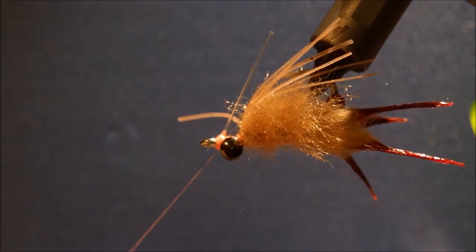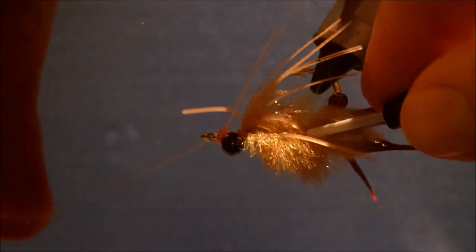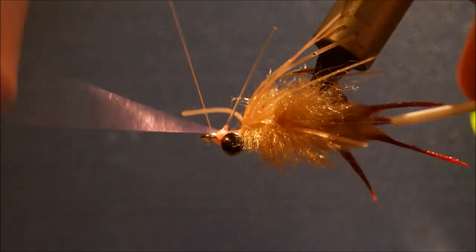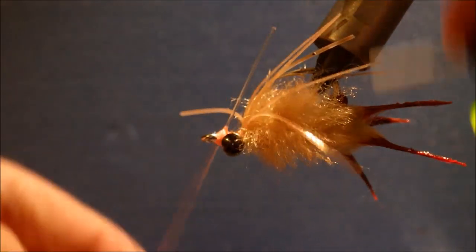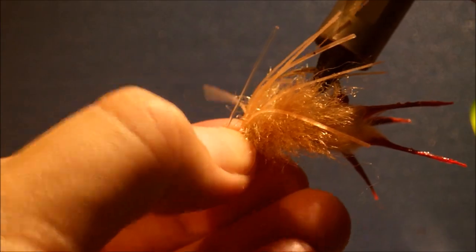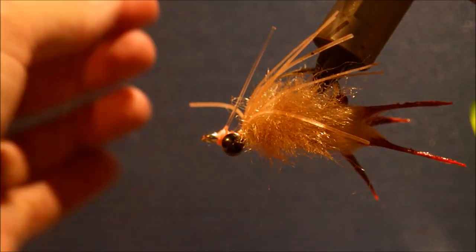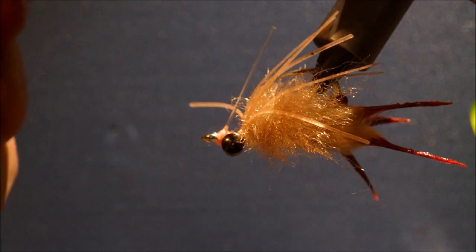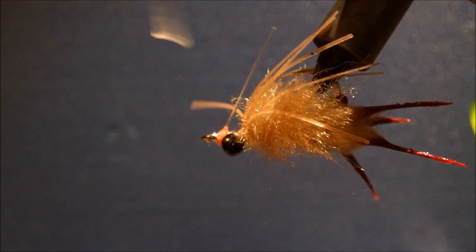And then I'll just whip finish it behind because I like to throw my whip finish behind the weed guard as well just to prevent any risk of the turns of the whip finish forcing the weed guard back. Plenty of turns, and that's it. I'll just get a bit of zappagap on the thread wraps here and then I'll coat it with Sally Hansen's. That's the kung fu crab.